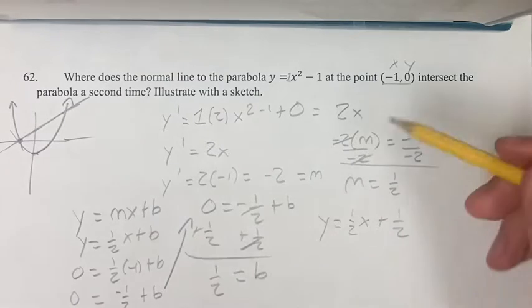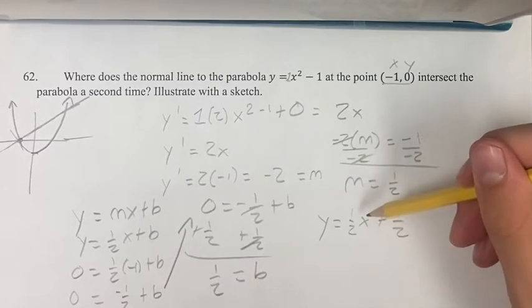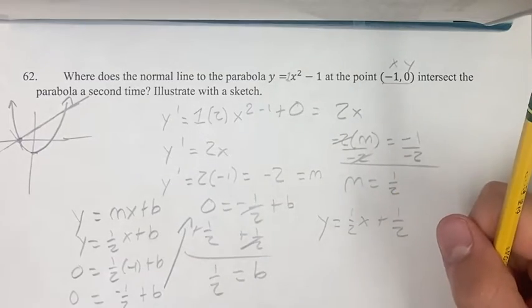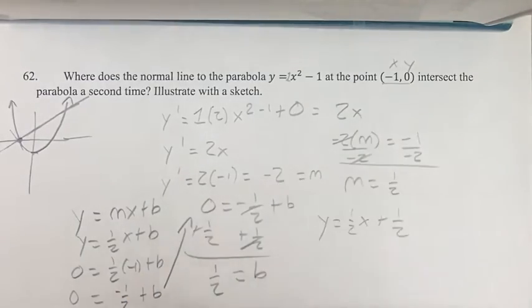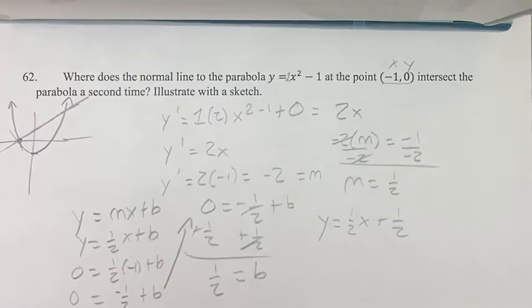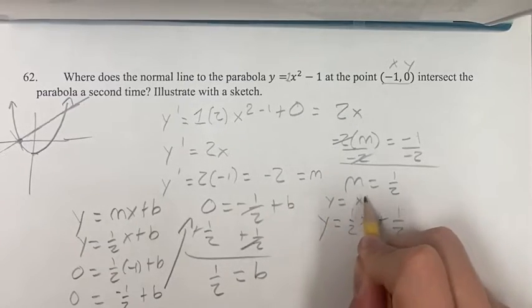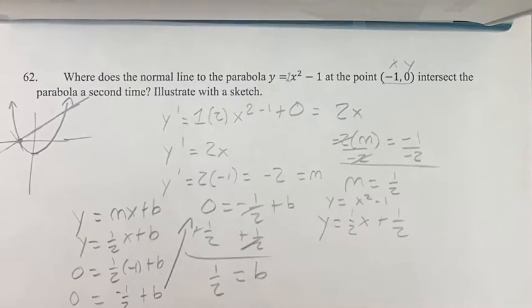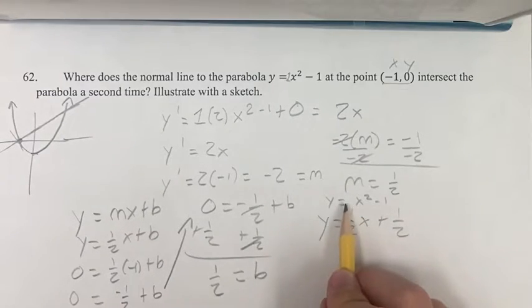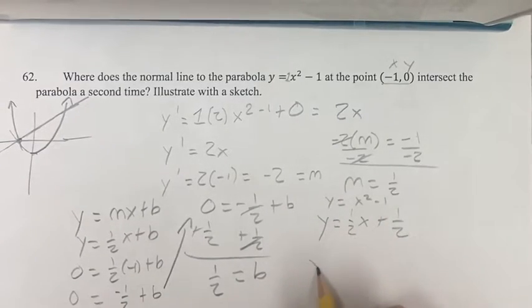So we know that this line intersects at negative 1, 0. We also know it intersects a second time. To do that, we have to set these equations equal to each other, and then we can find the point of intersections. So we have y equals x squared minus 1, and y equals 1 half x plus 1 half. Therefore, since these are both equal to y, they're equal to each other.